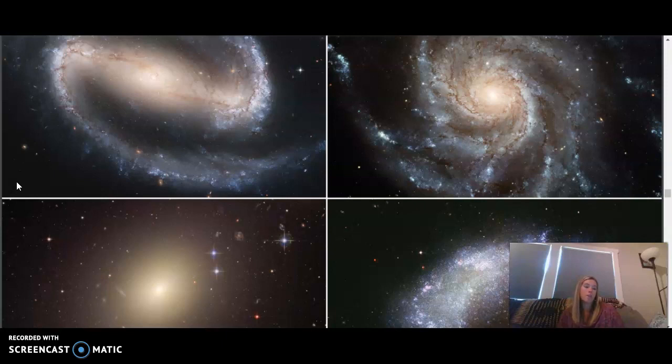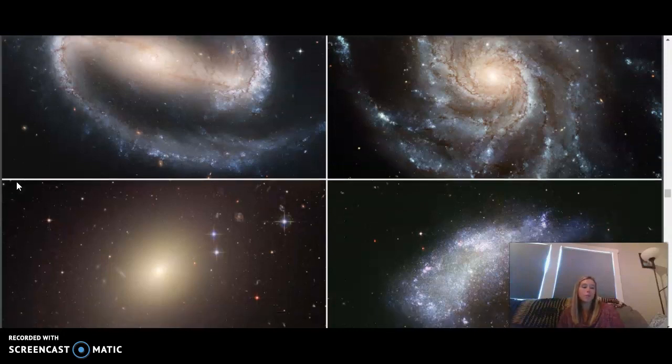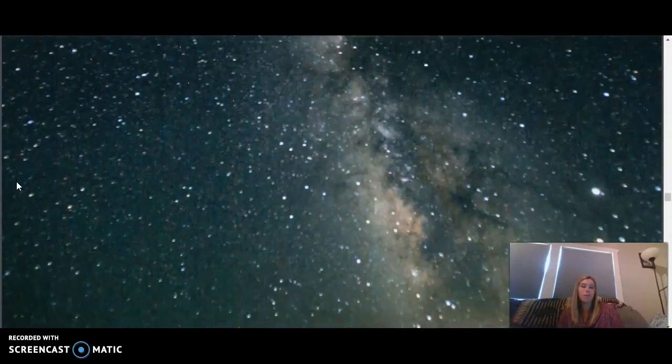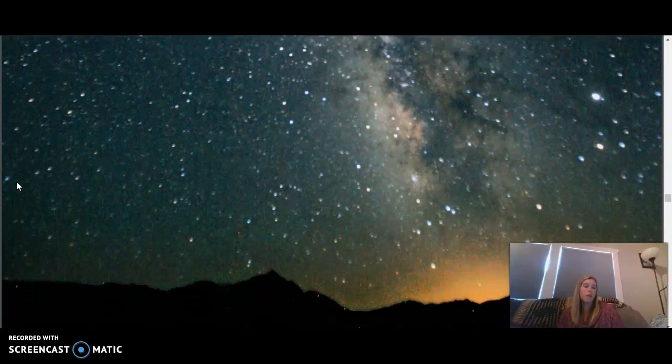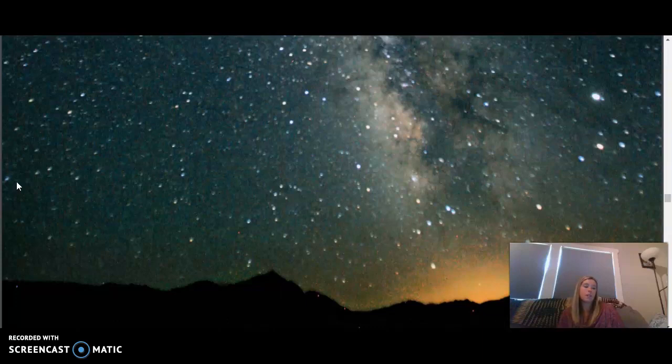But all galaxies are not the same. They come in many shapes and sizes. Some galaxies are spiral. Some galaxies are elliptical in shape. Still, other galaxies are irregular in shape with no particular pattern. The galaxy that our solar system is in is called the Milky Way Galaxy, which is a spiral galaxy.